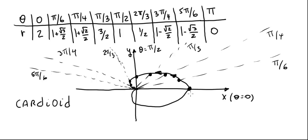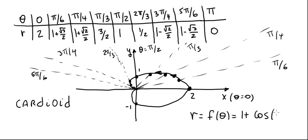By symmetry we get exactly the same shape on the opposite side of the polar axis. This produces a heart-shaped graph called a cardioid. We can label a few points: the value 2 at theta equals 0, the value 1 at theta equals pi over 2 (top), and 1 at theta equals minus pi over 2 (bottom). That is the graph of the cardioid r equals f of theta equals 1 plus cosine of theta.